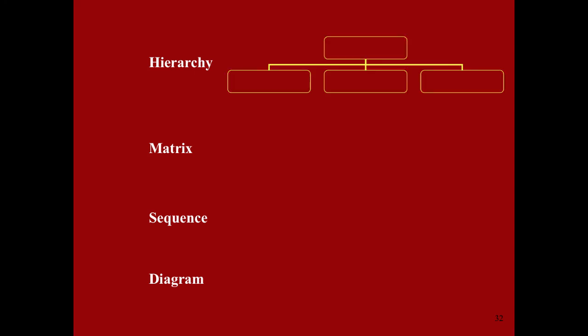The four representations are hierarchies, matrices, sequences, and diagrams. Hierarchies organize ideas into levels and groups. Keywords that may prompt you to use a hierarchy are kinds of, composed of, classified as, or parts of.